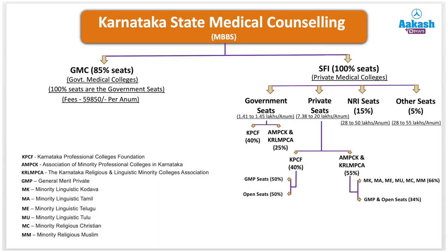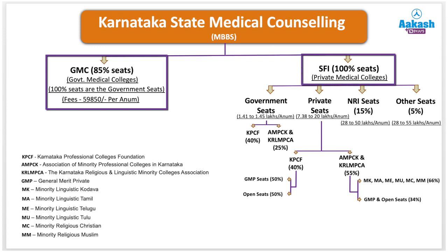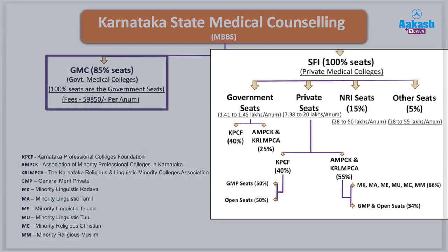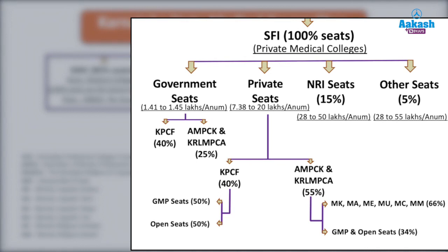The Karnataka state medical counseling chart is divided into two parts. For government medical colleges, 85% of seats are available through state counseling, while 15% are filled by All India counseling on the MCC website. For self-finance or private medical colleges, 100% of seats are available here. For private colleges, the seat bifurcation under KPCF (Karnataka Professional College Foundation) is: government seats 40%, private seats 40%, NRI seats 15%, other seats 5%.